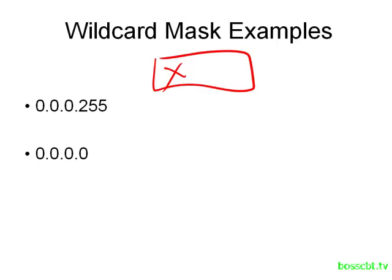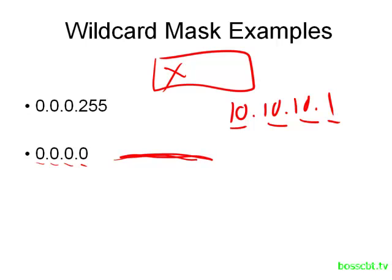Here's another example. Our wildcard mask is made up of all 0s. That means if our packet has the IP address of 10.10.10.1, for example, then every single one of these octets would have to match whatever source we're listing in our access list, because this wildcard mask is saying each octet has to be an exact match. Normally the access list would list a specific IP address.